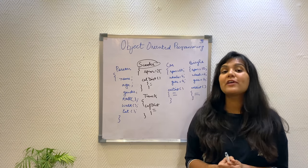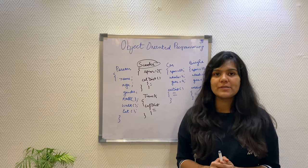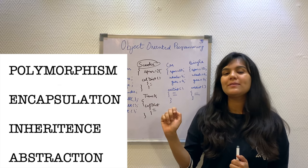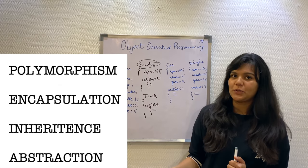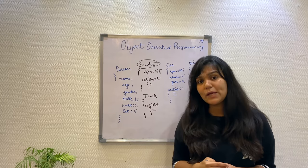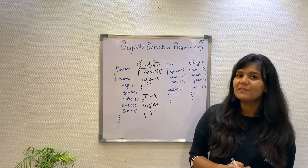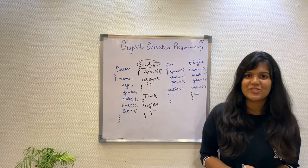In the next video, we are going to discuss the four pillars of OOPS that are polymorphism, encapsulation, inheritance and abstraction. If you have any questions or clarifications, please put them in the comment box and we will try to solve them as soon as possible. Thank you for watching.